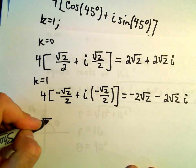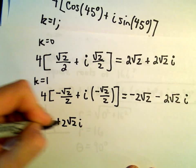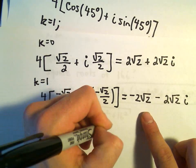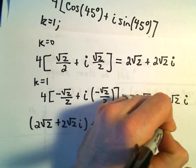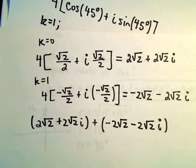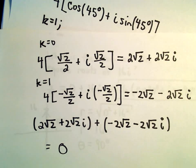Well, if we add 2 root 2 plus 2 root 2 i, and we add our other root, negative 2 root 2 minus 2 root 2 times i, it looks like, to me, everything is just going to cancel out. And, when we add those roots together, our final answer would just be 0.